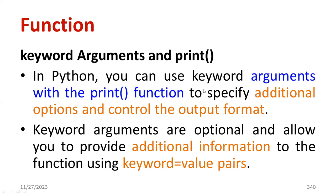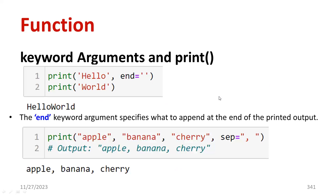Keyword arguments and print: in Python, you can use keyword arguments with the print function to specify additional options and control the output format. Keyword arguments are optional and allow you to provide additional information using keyword-equals-value pairs. For example, print('hello', end=' ') then print('world') — you will get 'hello world' as output. The end keyword argument specifies what happens at the end of the printed output.